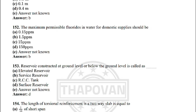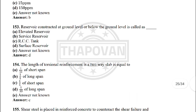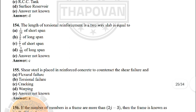Next: the maximum permissible fluoride in water for domestic supply should be — the correct answer is option B: 1.5 ppm. Next: a service reservoir constructed at ground level or below ground level is called — the correct answer is option D: surface reservoir.